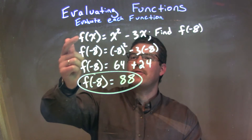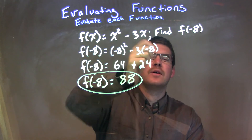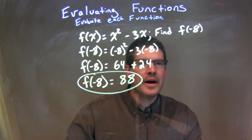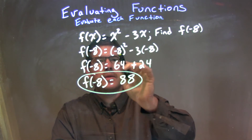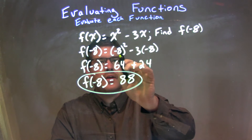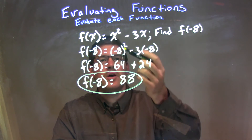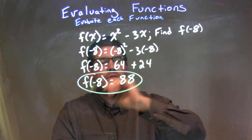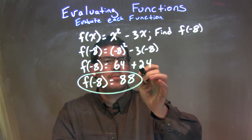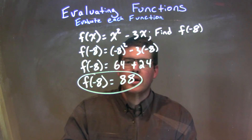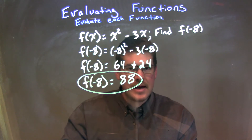Let's recap. We're given f of x is equal to x squared minus 3x, and we need to find f of negative 8. Every single time I see an x, I put a negative 8. So we have negative 8 squared minus 3 times negative 8. Negative 8 squared is a positive 64, and minus 3 times negative 8 is a positive 24. We combine 64 plus 24 to get a positive 88.